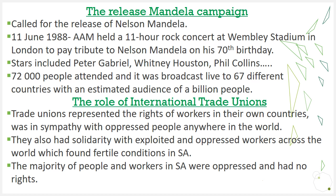The role of the trade unions: for each of the three trade unions, know the date it started and what it actually did to help end apartheid. Trade unions represented the rights of workers in their own countries and were in sympathy with oppressed people everywhere. People in trade unions are used to fighting for everything they want — wage increases, proper treatment — so they had a soft spot for anyone being oppressed. The majority of workers in South Africa during apartheid were oppressed and had no rights.